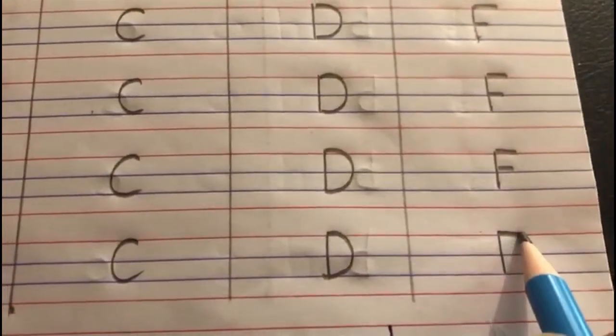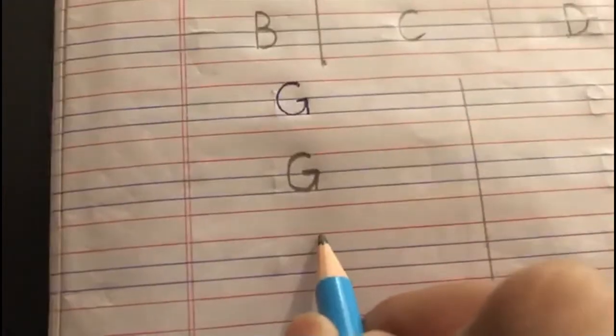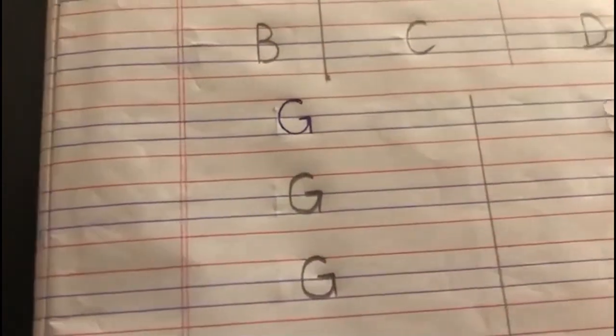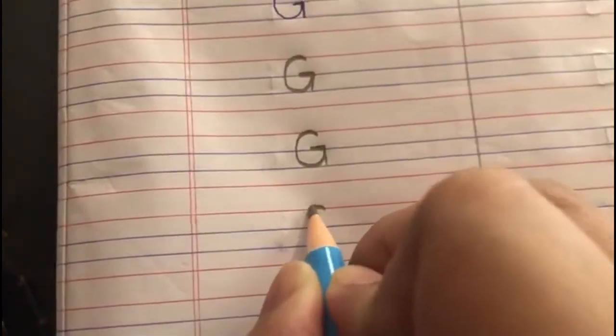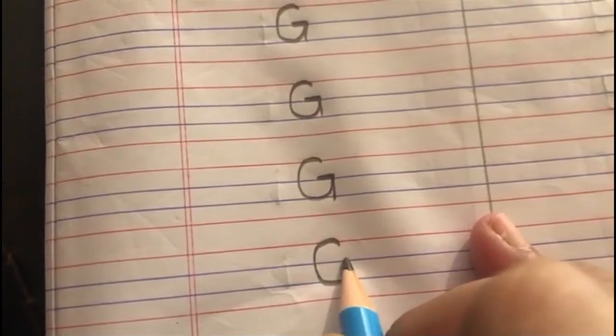Now moving to letter G — start from the red line, make a curve, go up, come in, come out, and take a line down. G says guh. Again: start from the red line, make a curve up to the first blue line, take a sleeping line in, out, and down.